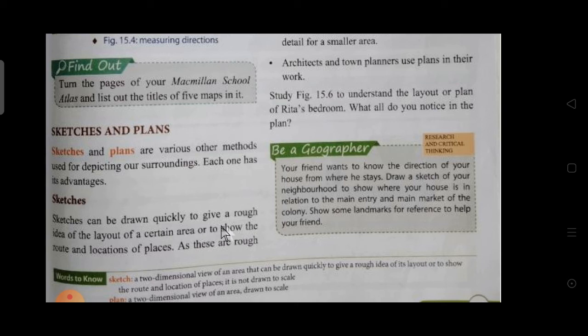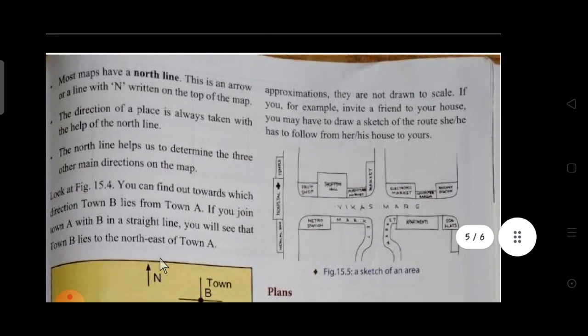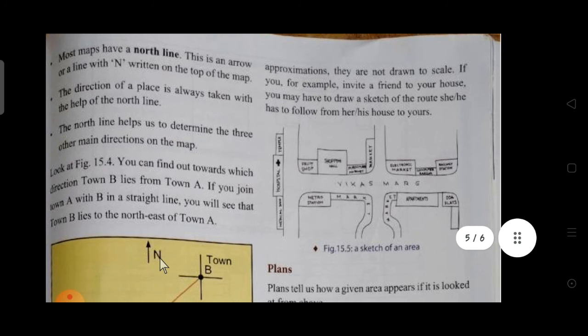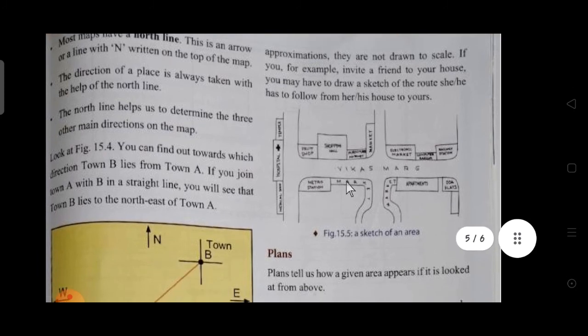Sketches can be drawn quickly to give a rough idea of the layout of a certain area to show the routes and location of places. A sketch is not a specific or perfect figure, we draw it roughly just to get an idea. It doesn't have a scale and is not drawn with measurements. For example, if you invite your friend to your house, you can draw a rough sketch showing them to go straight, then at the crossroads take right or left. That is a rough sketch.